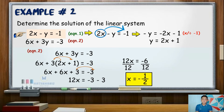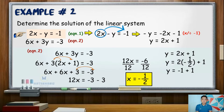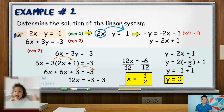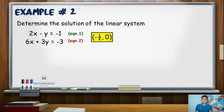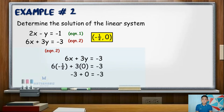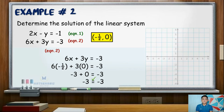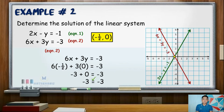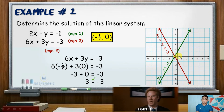To solve for y, we use equation 1 expressed in terms of y. That gives y equals 2 times negative one-half plus 1. 2 times negative one-half is negative 1, and negative 1 plus 1 is 0. Hence, the value of y is 0. To check the solution set, substitute the values into equation 2: 6x plus 3y equals negative 3. With x equal to negative one-half and y equal to 0, that gives 6 times negative one-half (which is negative 3) plus 3 times 0 (which is 0), equaling negative 3. The left and right sides are equal, so the solution set is correct. The graph shows the point of intersection at coordinate (negative one-half, 0).